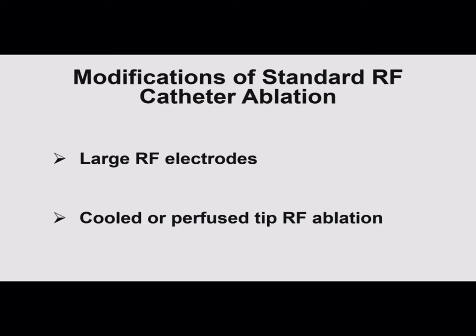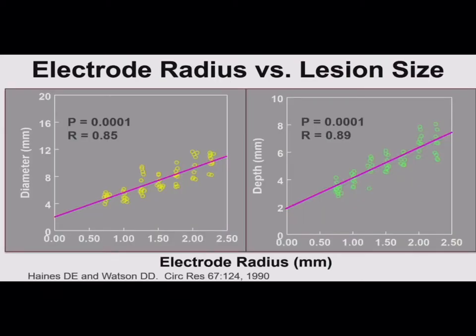Because of some of these limitations, larger RF electrodes were developed. Early work from David Haynes showed that if you make the zone of resistive heating bigger and then have conductive heating from there, you're going to make your whole lesion larger. The key point is that presumes you're heating the tissue-electrode interface to the same temperature. With a larger electrode, you may actually have to deliver more power to get to that same temperature, and then you'll get a larger lesion with a larger electrode radius.